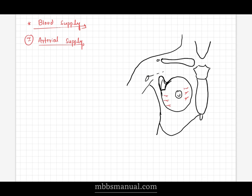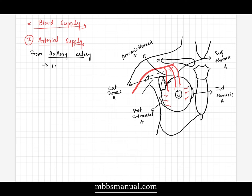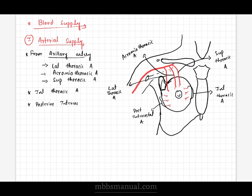Blood supply of the mammary gland — arterial supply: the mammary gland is supplied by the following five branches. From the axillary artery, three branches supply: the lateral thoracic artery, the acromiothoracic artery through its pectoral branch, and the superior thoracic artery. Additionally, the internal thoracic artery via its perforating branches, and the posterior intercostal artery.